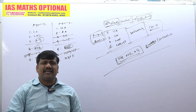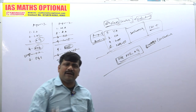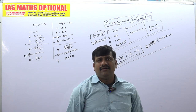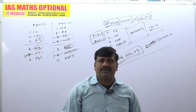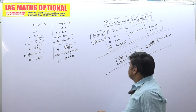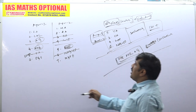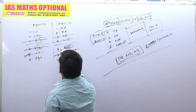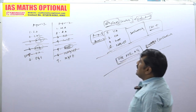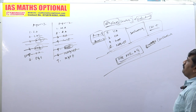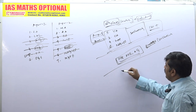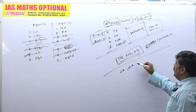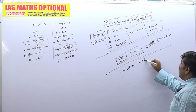Beyond that, we are wasting time. We are simply wasting time on books only — not required at all. Next, I have completed the ODE, analytical geometry, and partial differential equation. Next, my topics are: at a time, linear algebra, modern algebra, real analysis, and calculus.